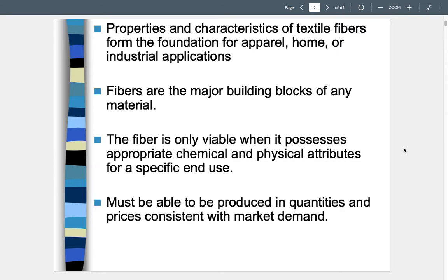Fibers are the major building blocks of any material — the tiniest components that make up a yarn, then fabric, then a shirt. A fiber is the basic component that makes up a diaper or the upholstery in your vehicle. Fibers are the tiny, hair-like structures we use to create textiles. A fiber is only viable when it possesses appropriate chemical and physical attributes for a specific end use. For example, a fiber that is naturally absorbent would not be good for a raincoat or umbrella.